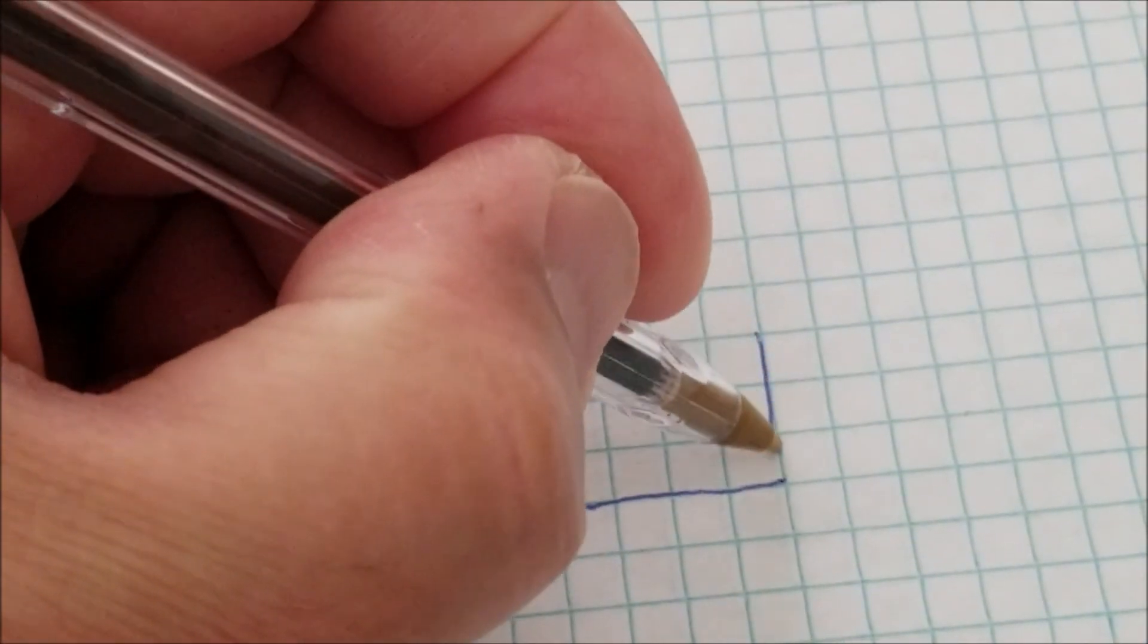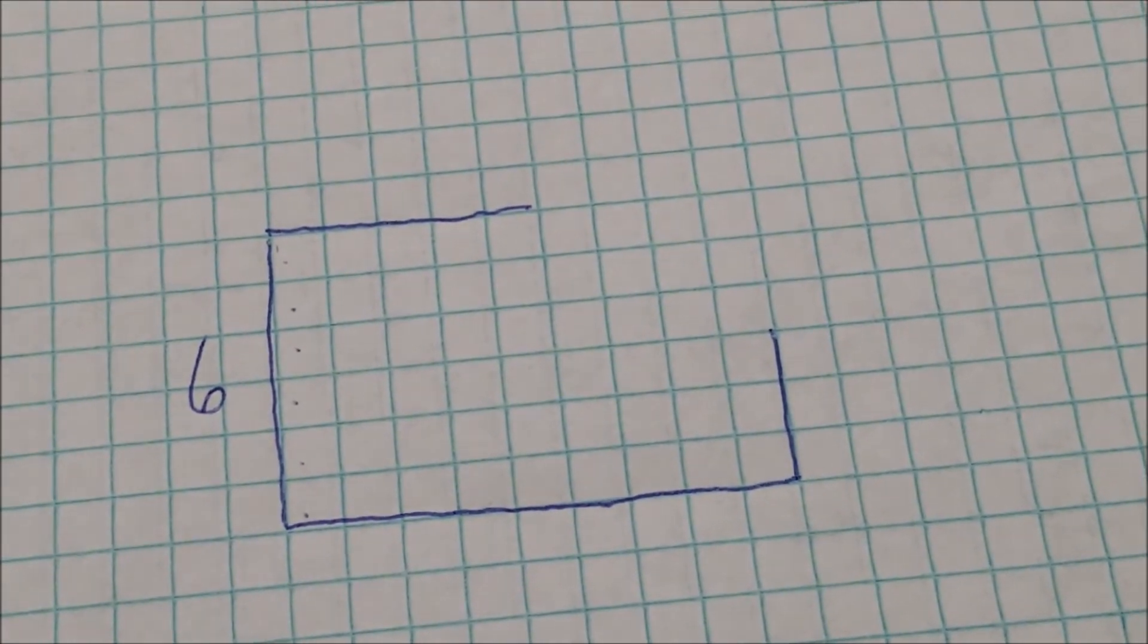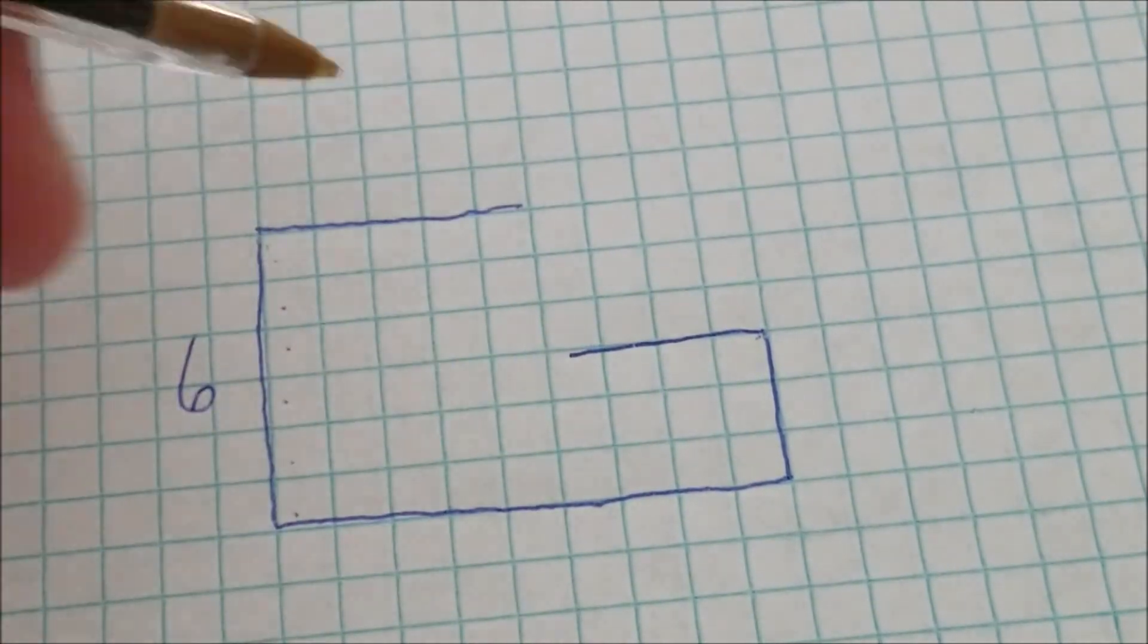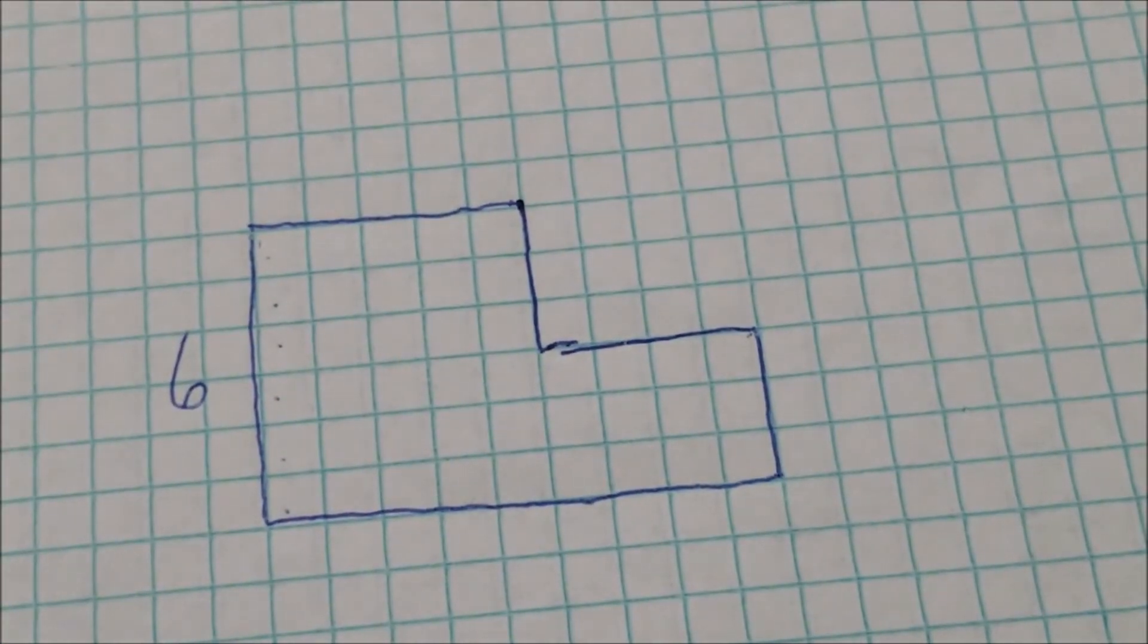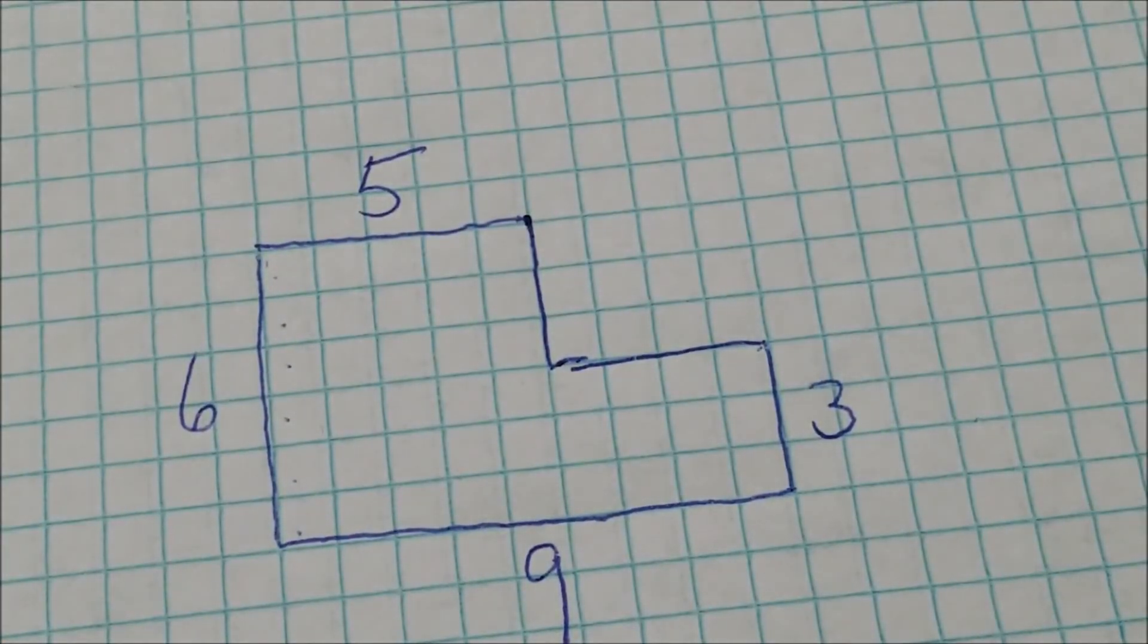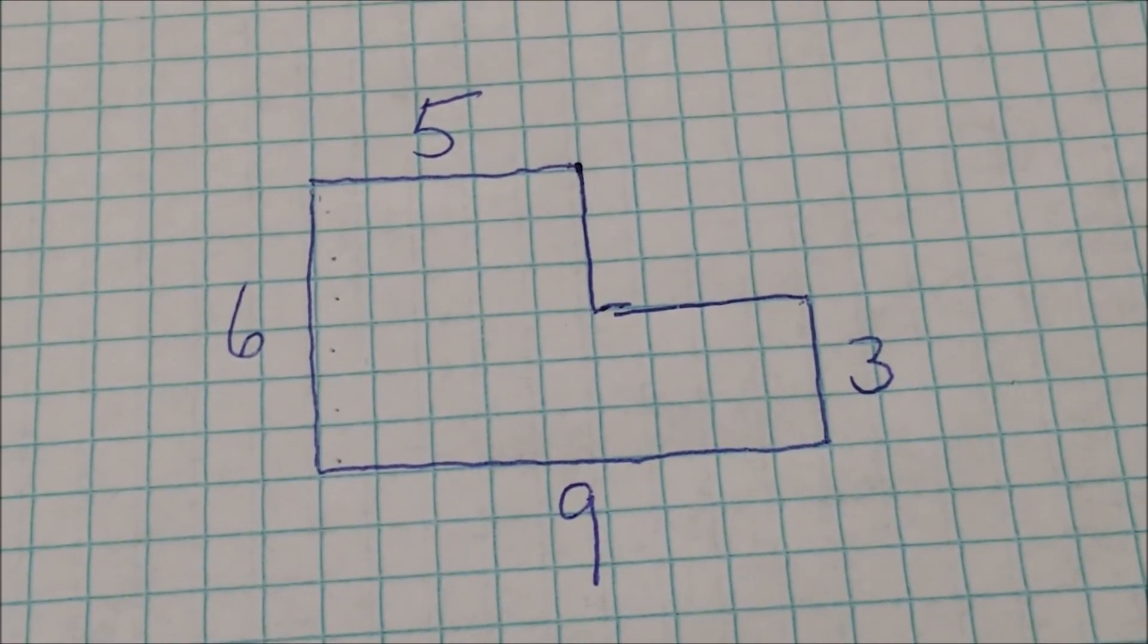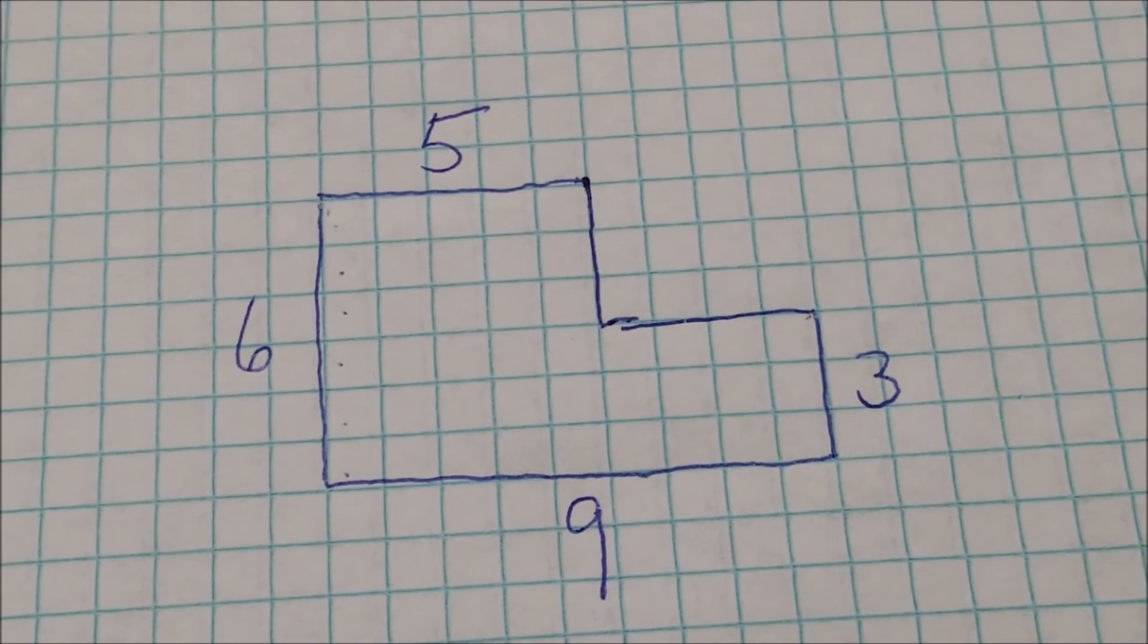Three yards high. And here was the mystery part here. So if it's three high, it's going to come straight across here. And this is the beauty about the graph paper is I'm able to now just be able to count boxes. So it's six by five. Down here is nine. This is three.